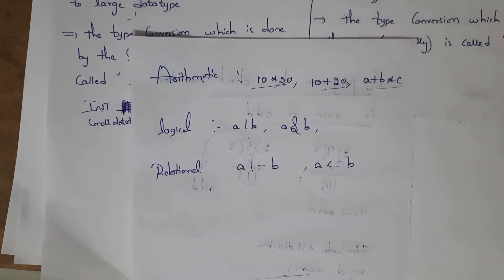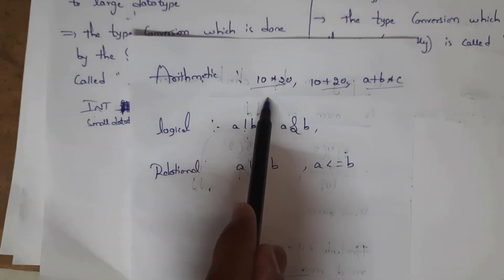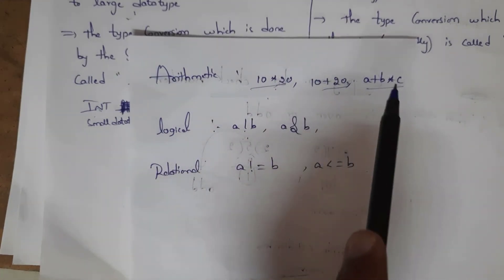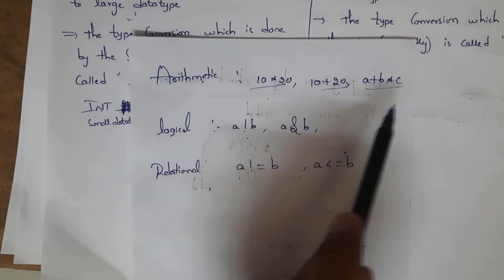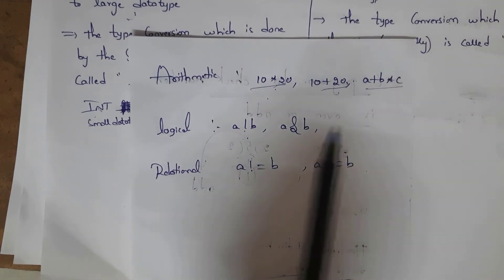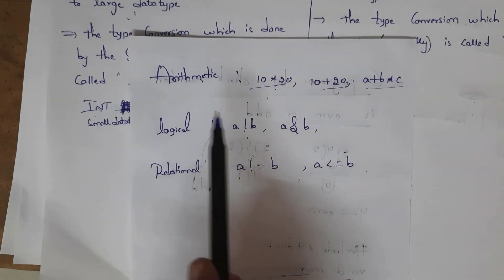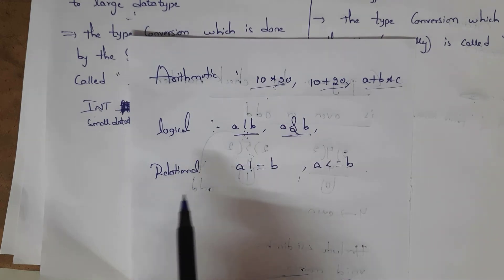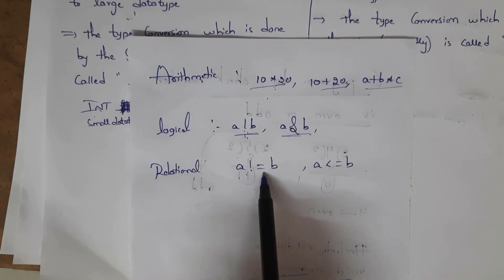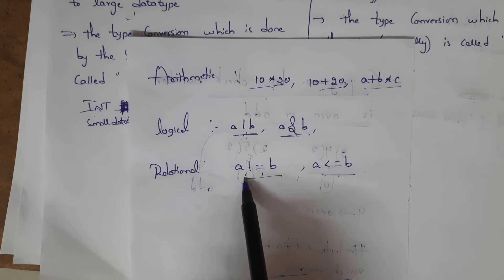There are various types of expressions. Examples of arithmetic expressions: 10 * 20, 10 + 20, A + B * C. Examples of logical expressions: A || B, A && B. Examples of relational expressions: A != B, A <= B.